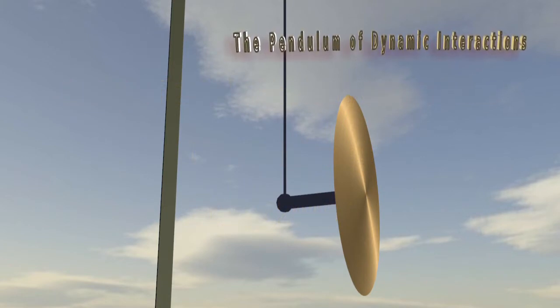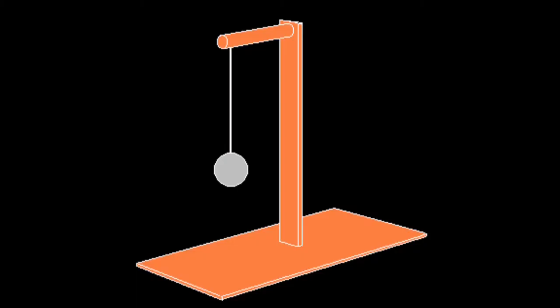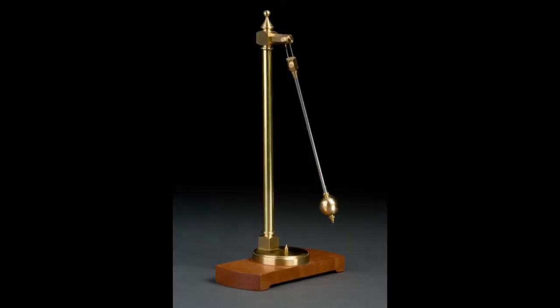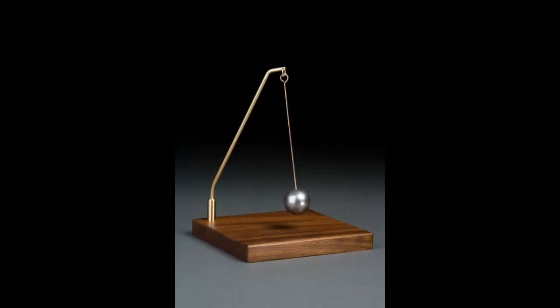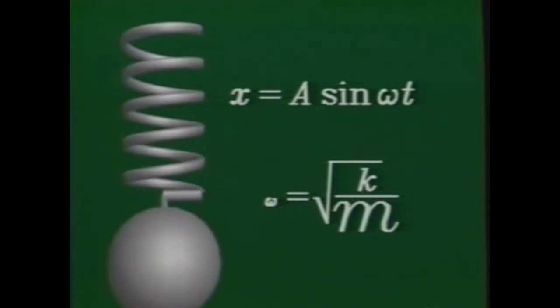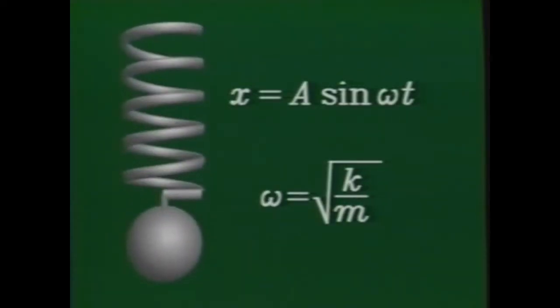The pendulum of dynamic interactions. A pendulum is a physical system with a mass hanging from a fixed point by a string or a rod and which can swing freely due to gravitational action. Any other interaction such as a magnetic field or material elasticity can also cause the pendulum to oscillate.